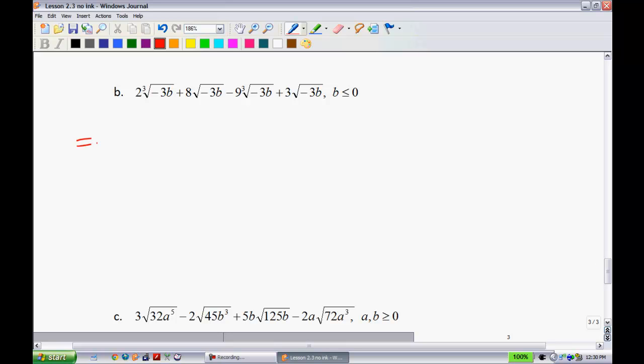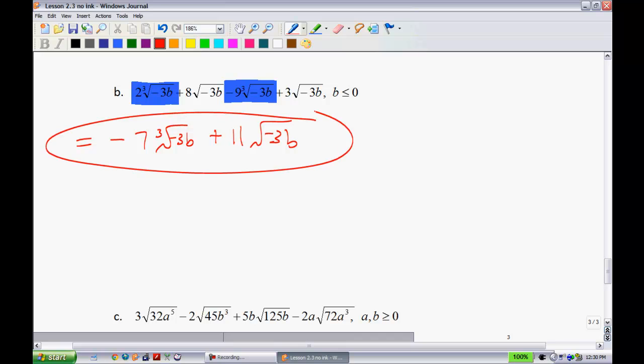Okay, give this one a try on your own, please. I will deal with the cube roots first. So, since I'm seeing that all the radicals are the same, I know I can combine these ones. So, I'll just highlight these just so I can kind of get them out of the way. Let's combine those together. That's going to give me a negative 7 cube root of negative 3b. Don't forget those cube roots. And now, the last two terms, I can combine those. And that will give me plus 11 root of negative 3b. Good to go.